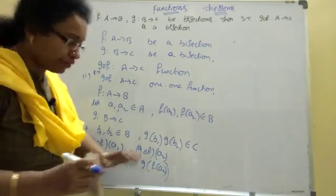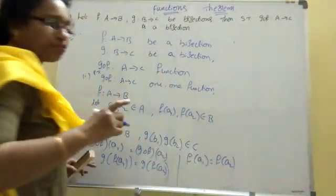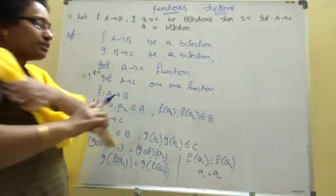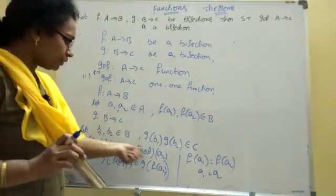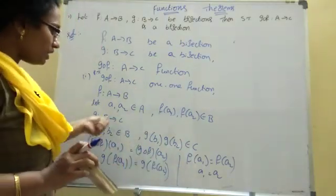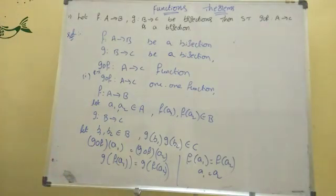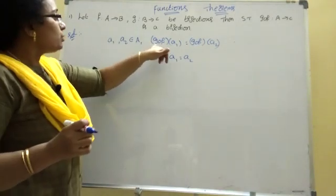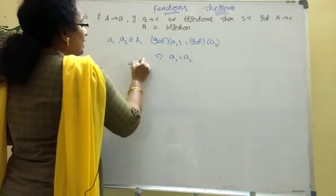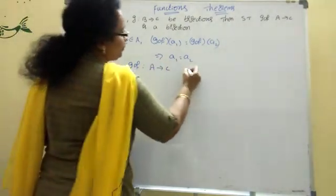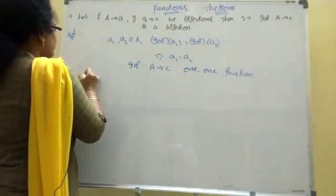Since G is a function, G cancels the image of C, giving F of A1 equal to F of A2. Since F is 1-1, we get A1 equal to A2. Therefore, G circle F from A tends to C is a 1-1 function.